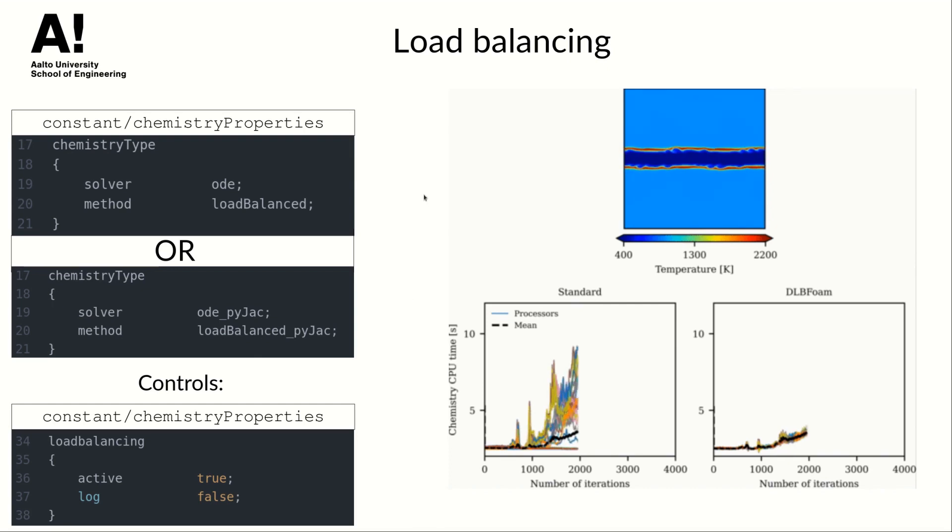The load balancer can be controlled in chemistry properties dictionary. First you need to set a proper chemistry type, it's either this or this. You set this one if you want to use load balancer and reference mapper only without LAPACK and PyJAC and this is if you want to use LAPACK and PyJAC. Then there is a switch which enables the balancer under the load balancing dictionary.